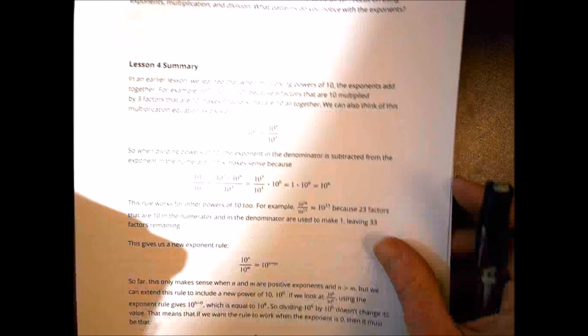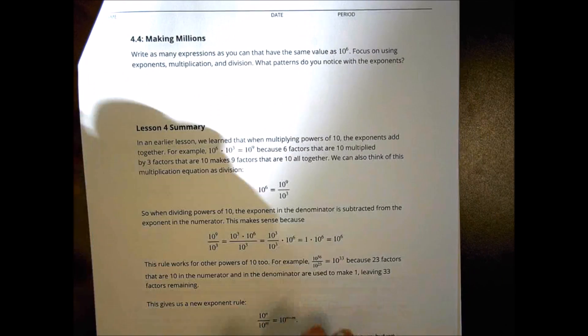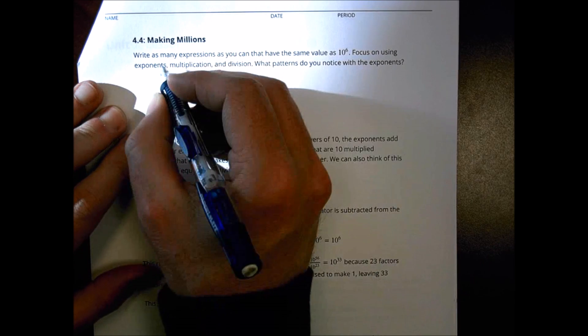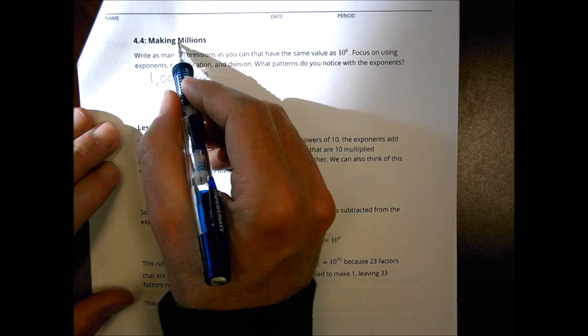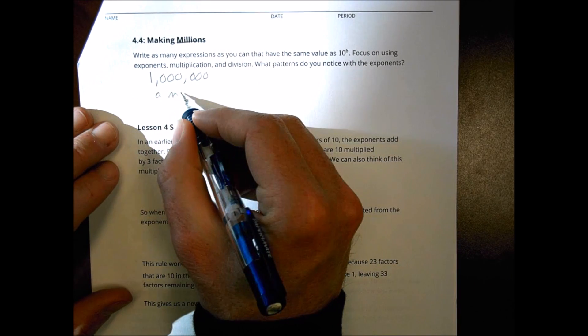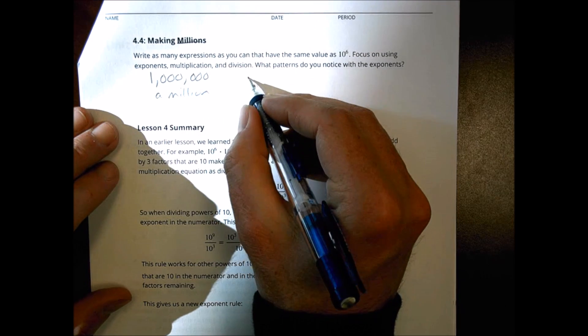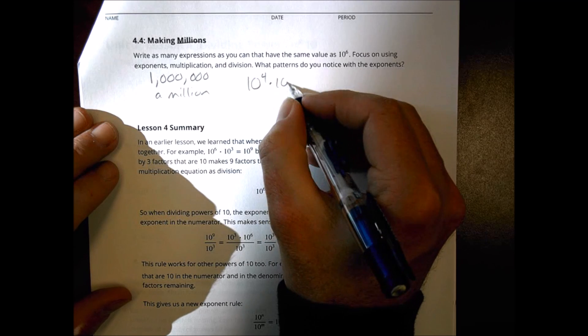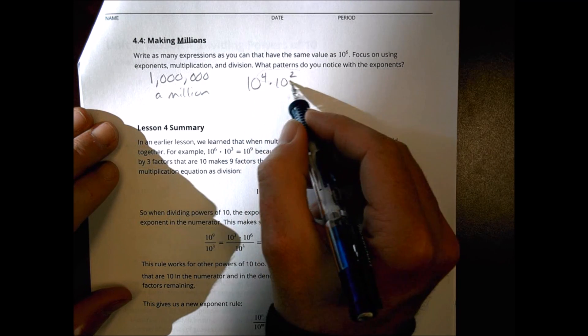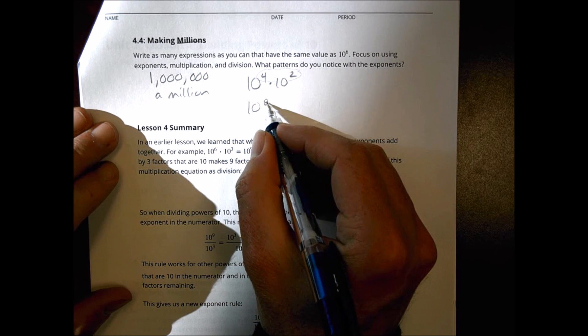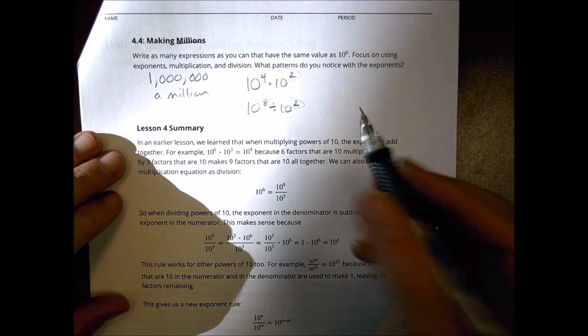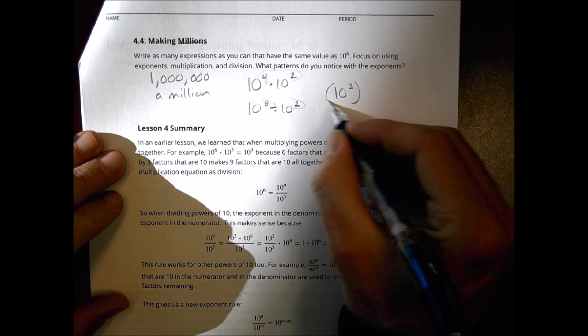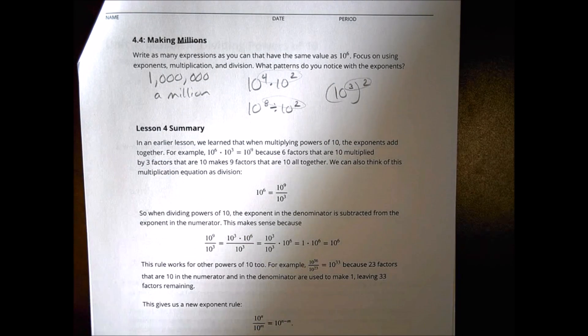Okay. Activity number four here, making millions. It says write as many expressions as you can at the same value as ten to the sixth power. Now ten to the sixth power means I put a one down and then I put six zeros. So that's a million, which is why it's called making millions. I could call that a million. I could write this as ten to the fourth times ten squared. Why? Because I add those up. I could do ten to the eighth divided by ten to the second. Why? Because I subtract those and I put ten to the sixth. I could do something like ten to the third and I could square that because I multiply that together to still end up with ten to the sixth power. So there's lots of things you can come up with.